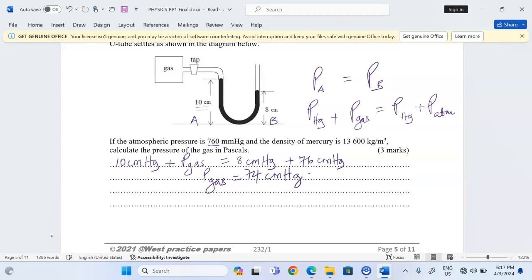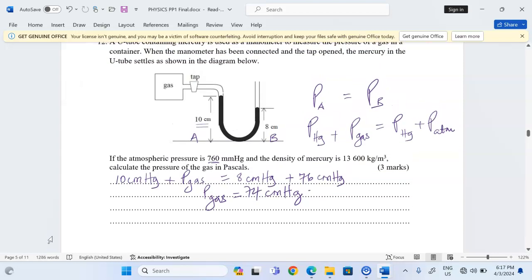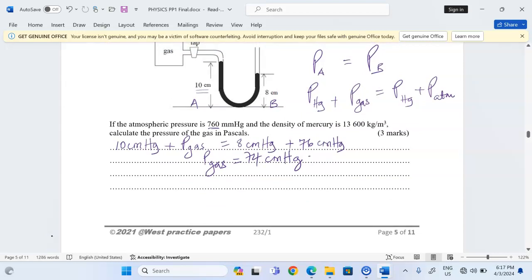We should now get back to our question and discover that we've been told to calculate the pressure of the gas in Pascals. For us to convert pressure into Pascals, we can get to the formula and say that pressure in liquids is usually given by h·ρ·g.